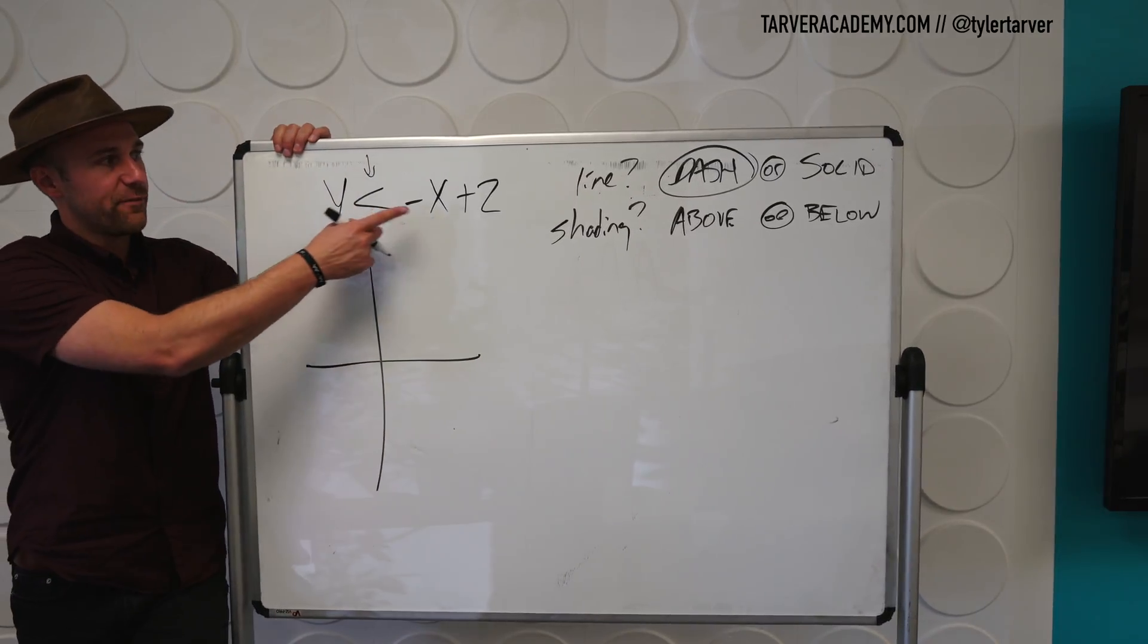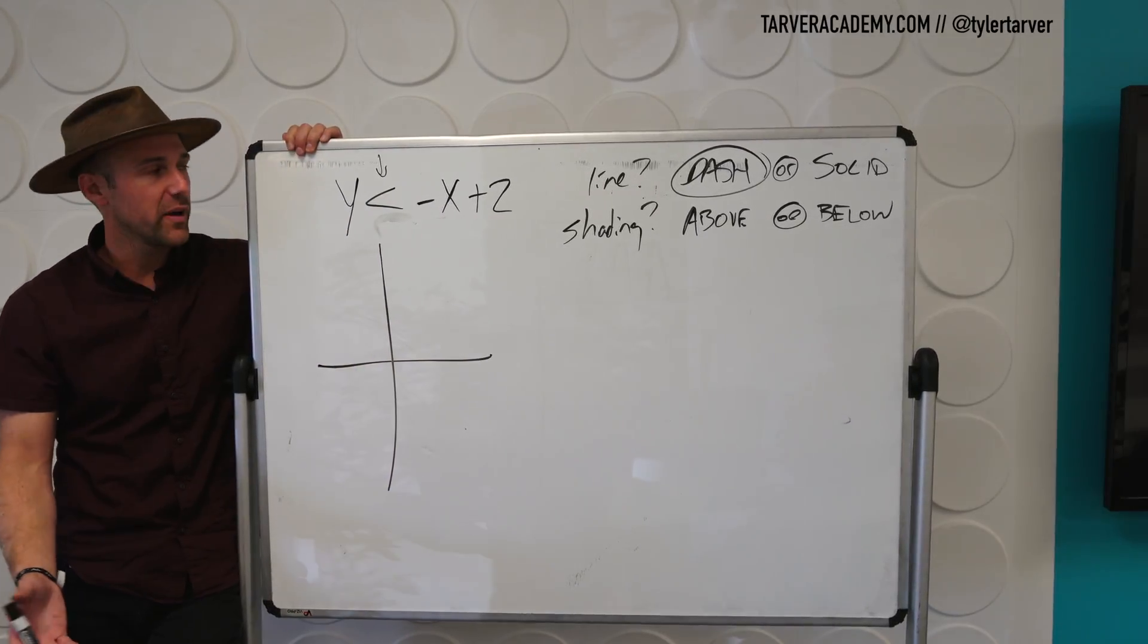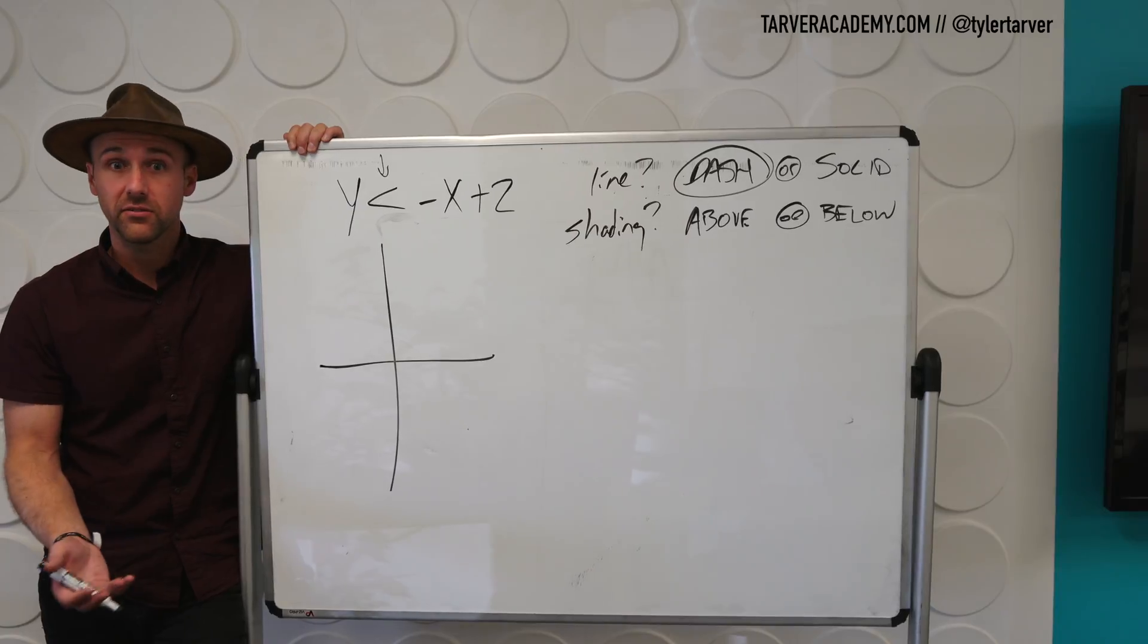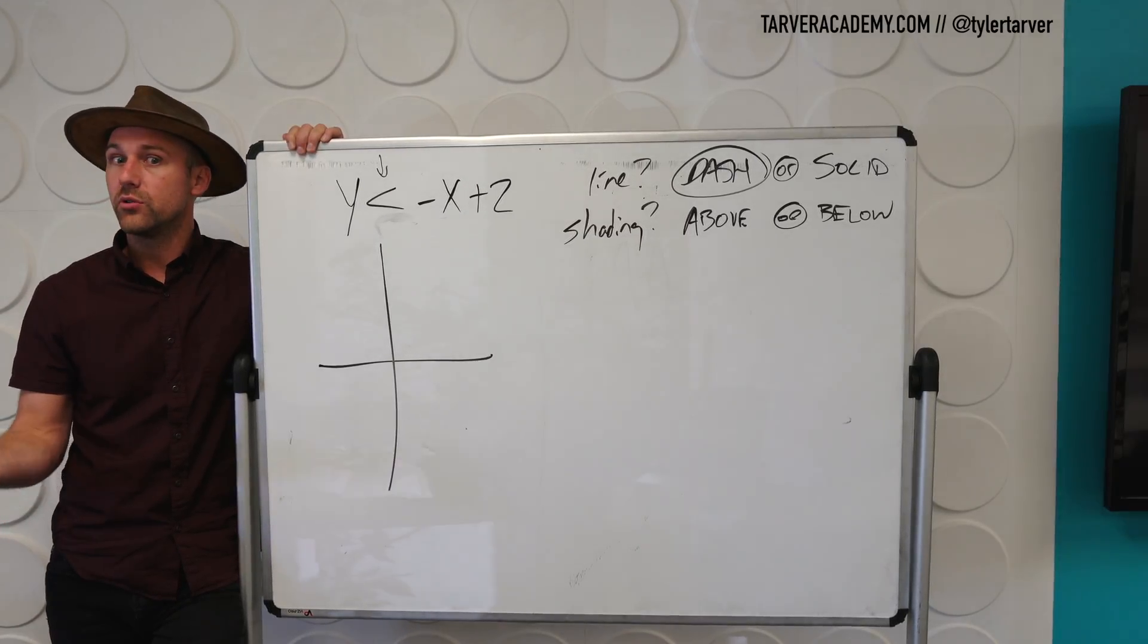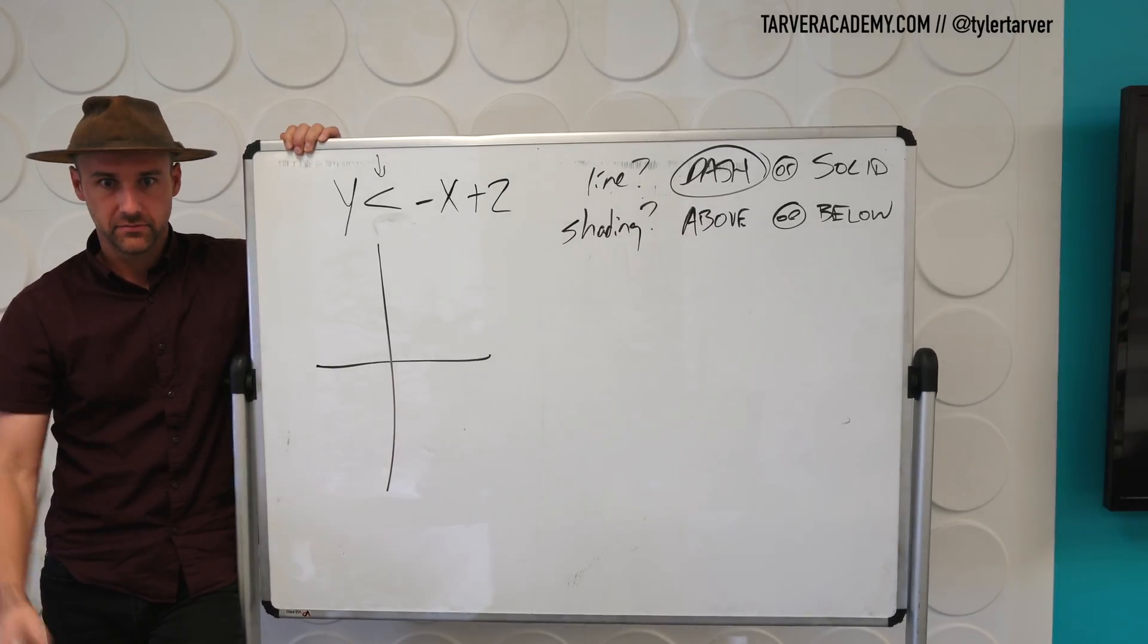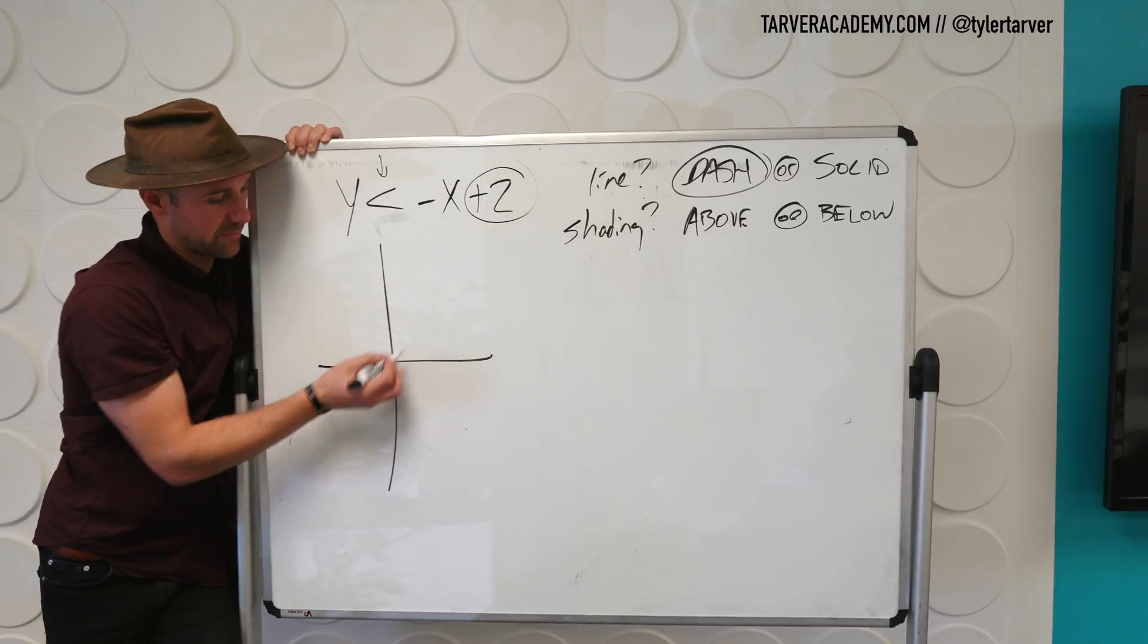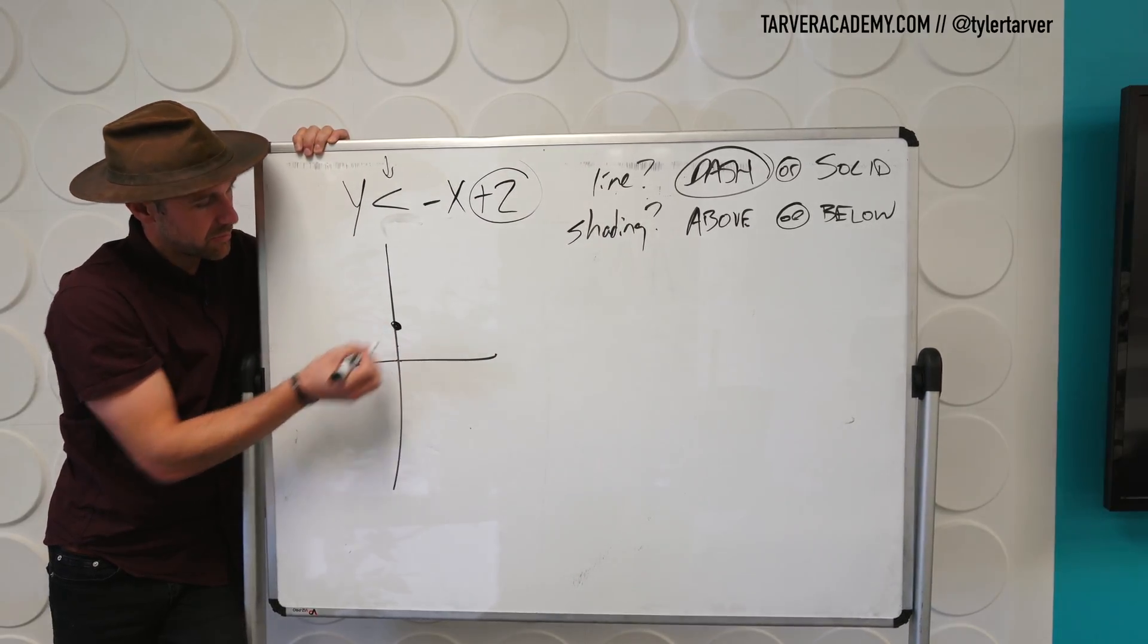Alright, so let's start by graphing it. What form does this look like? Y equals mx plus b. Slope intercept form. So the easiest way to graph something that's in slope intercept form is to use the intercept as your first coordinate. What's our intercept? 2. Very good. So I'm going to go to the y-axis because it said positive 2, so I'm going to go 1, 2. Boom.